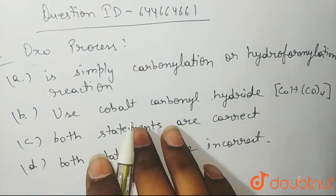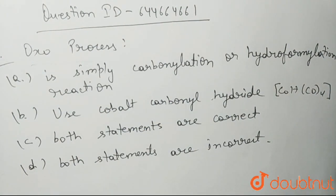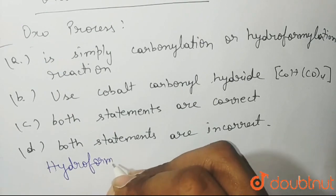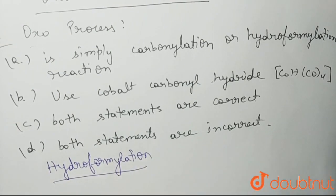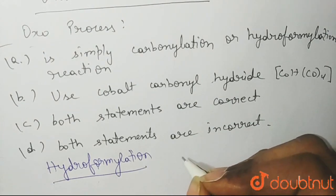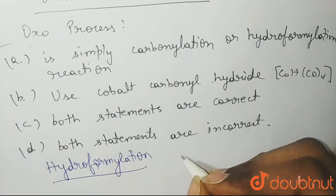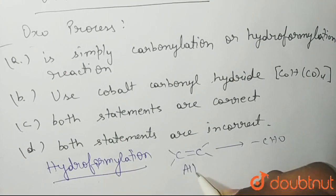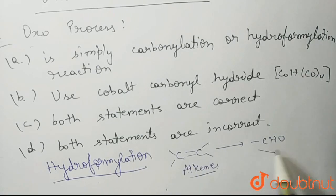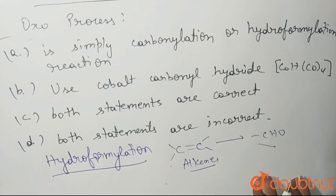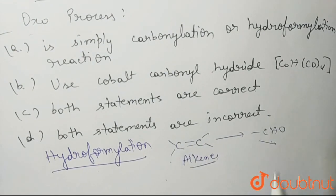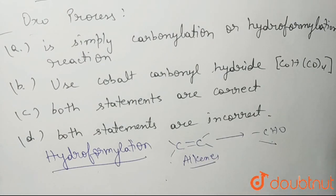So what is Oxo process? Oxo process is also known as the hydroformylation process. It is an industrial process for the production of aldehydes from alkenes. Simply carbonylation takes place, or you can say hydroformylation. This reaction for the conversion of alkenes into aldehydes is known as hydroformylation reaction, also known as the Oxo process.